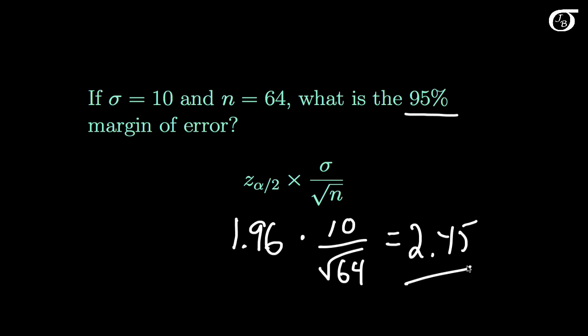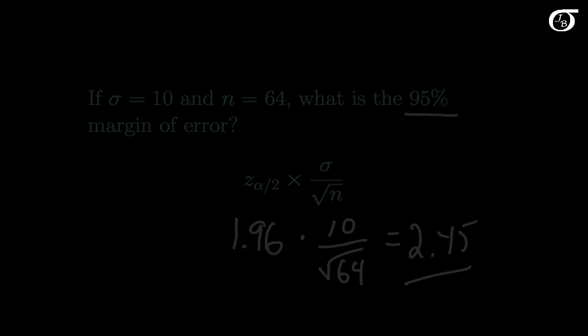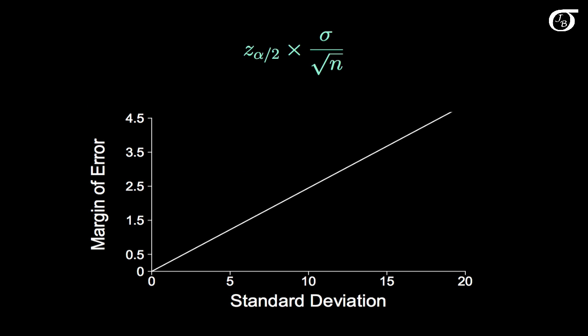Now let's look at what happens to the margin of error when we change sigma and n and the confidence level. Let's look at the effect of the standard deviation sigma on the margin of error. The greater the standard deviation, the greater the uncertainty, and the more difficult it is to pin down the value of the parameter of interest, and so the greater the margin of error.